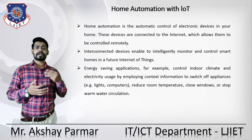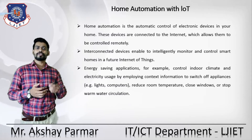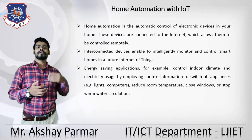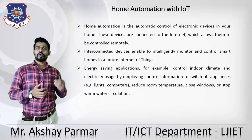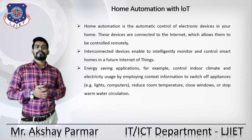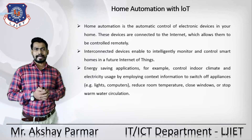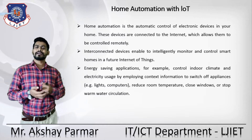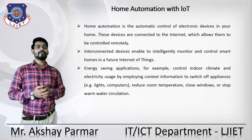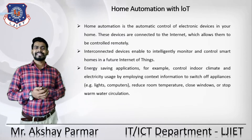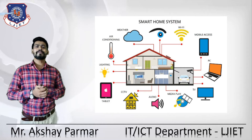An energy saving application, for example, controls indoor climate and electricity usage by employing context information to switch off appliances — such as lights, computers, fans and similar things. We can reduce room temperature, close windows, or stop warm water circulation. Whenever someone is coming into the room, the light will turn on when it is dark. When someone is leaving the room, all appliances will turn off by themselves. That is one example of how you can use the Internet of Things in home automation — controlling each and every electronic appliance with the help of IoT.